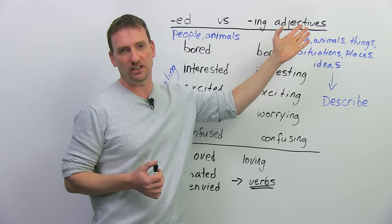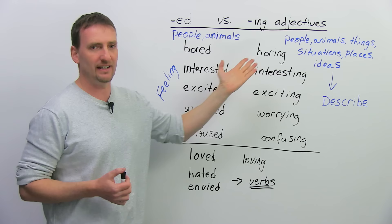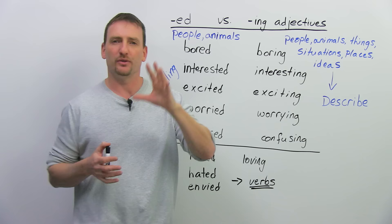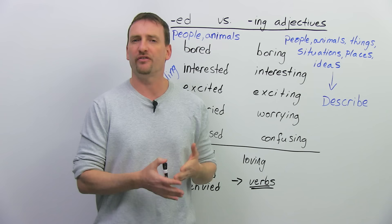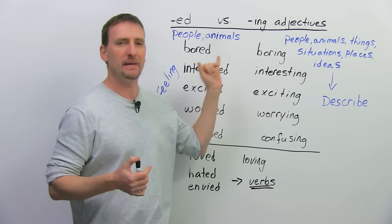So, for example, bored and boring, interested and interesting. Now, the reason it's important to know the difference between these is because what you say about yourself sometimes, how you describe things, can be very confusing to a native speaker especially, but to other people as well, if you mix these two up.